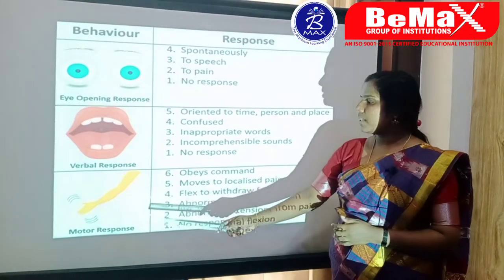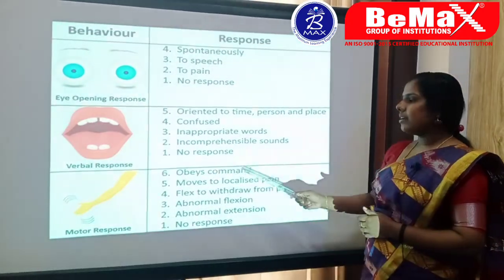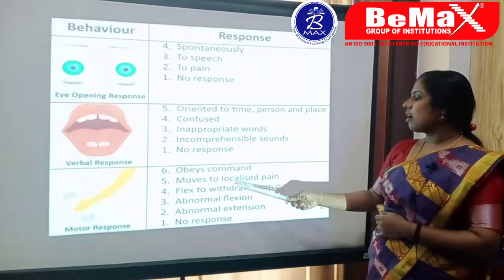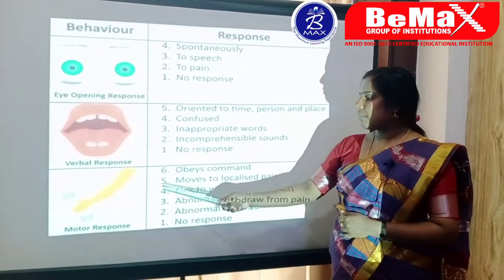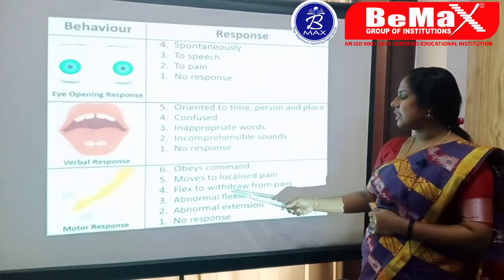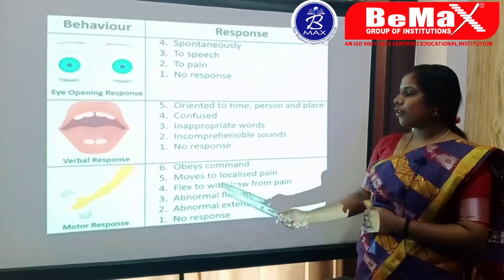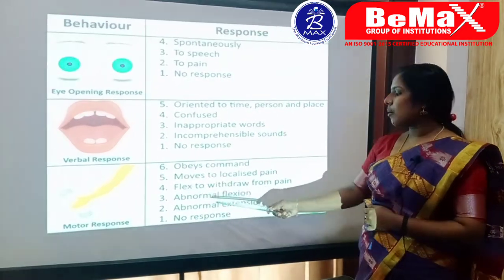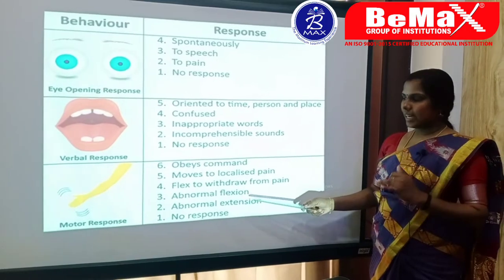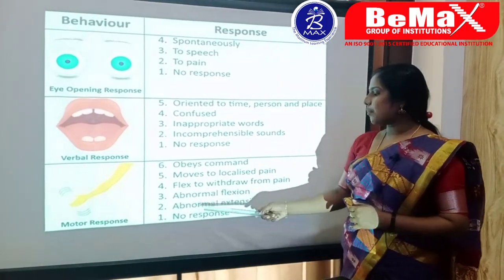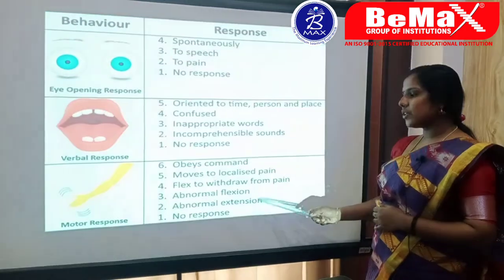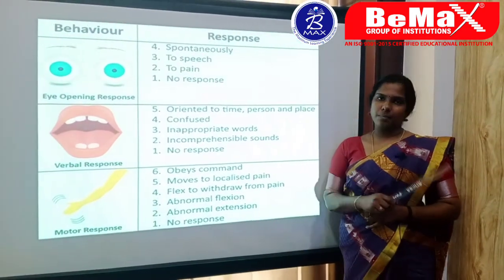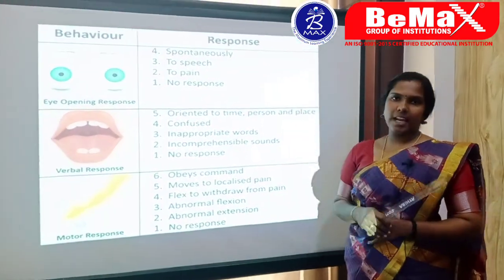For motor response: obeying commands scores 6; localizing pain scores 5; withdrawing from pain scores 4; abnormal flexion scores 3; abnormal extension to pain scores 2; and no response scores 1. That is the GCS scale.